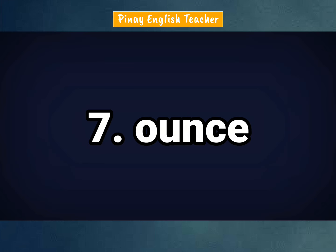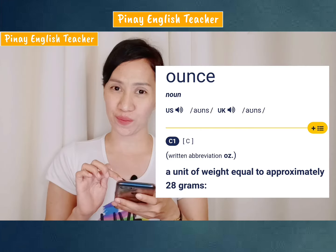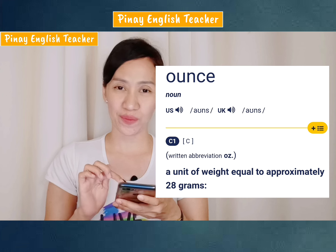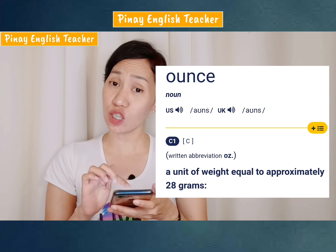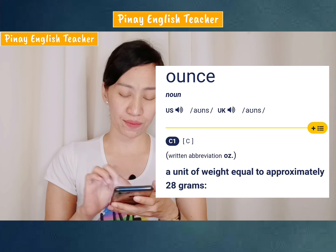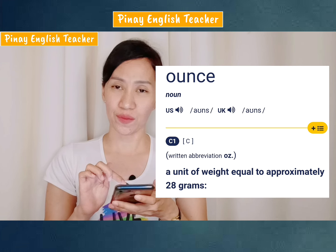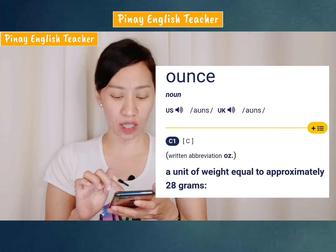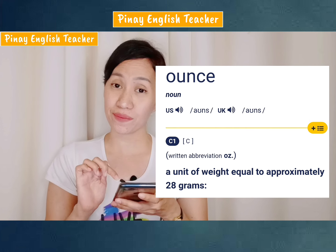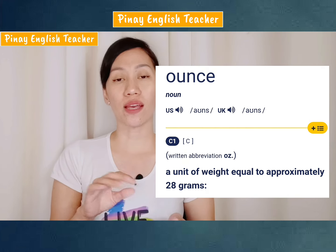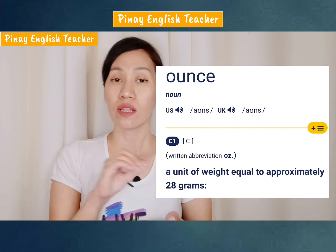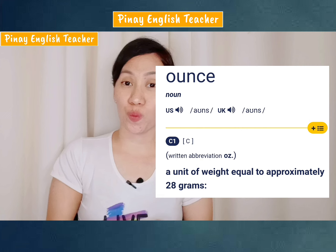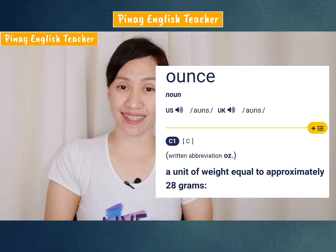Number seven: ounce. Ounce. In British English. American English: ounce. So that's ounce — 'ow' not 'o'. Ounce.